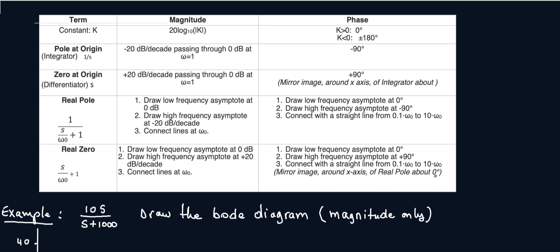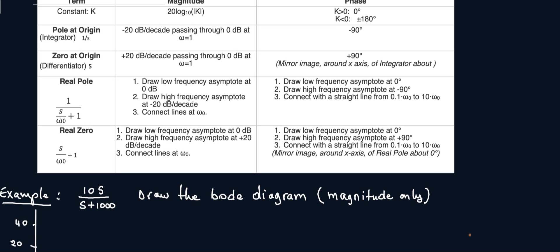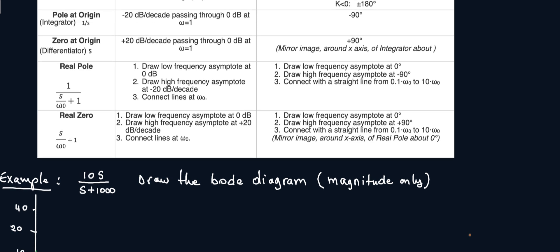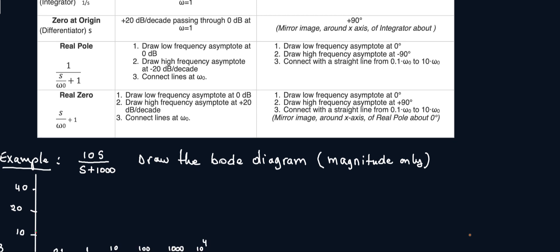So in this example we are asked to draw the Bode diagram for 10s over s plus 1000. So again first things first, what we're going to do is simplify the transfer function to the lowest order of unity. Meaning we're going to need to take out 10 for the numerator and then the denominator we're going to take out a thousand.